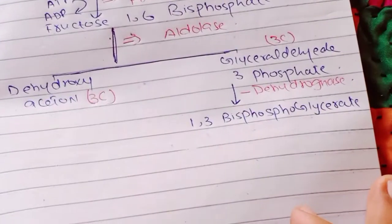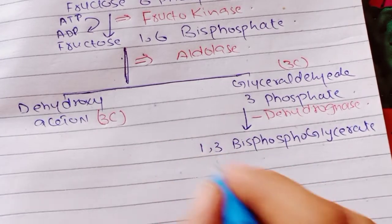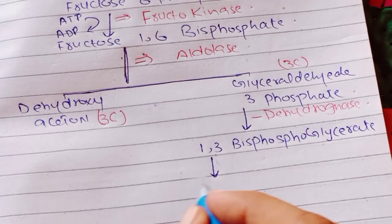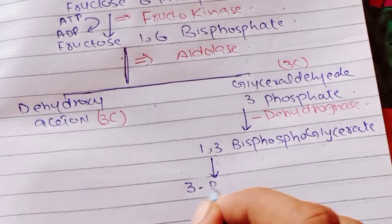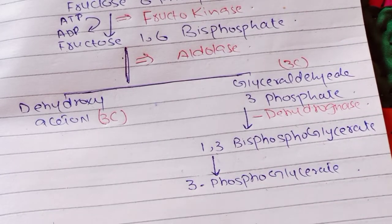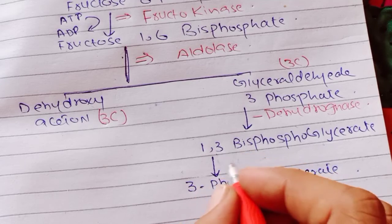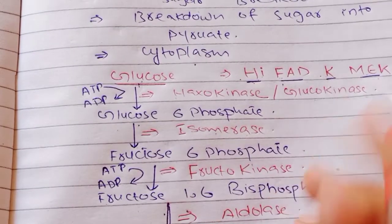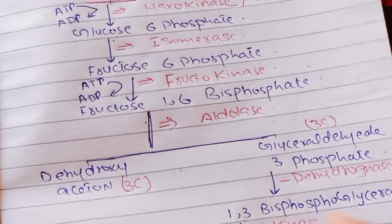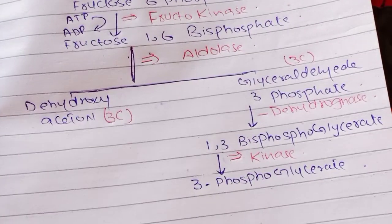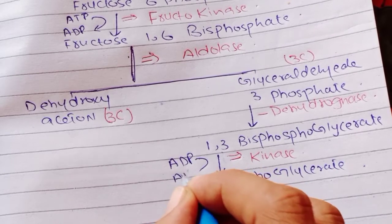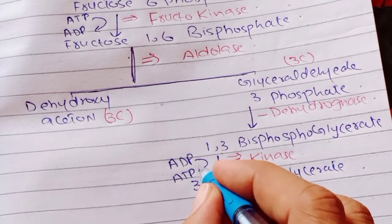1,3-bisphosphoglycerate will be converted into 3-phosphoglycerate. This step is catalyzed by the enzyme starting with K — that means Kinase. This step utilizes ADP, which is converted into ATP.